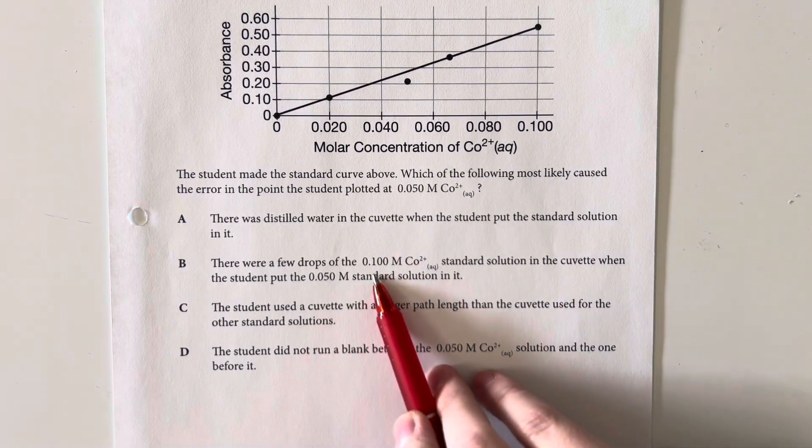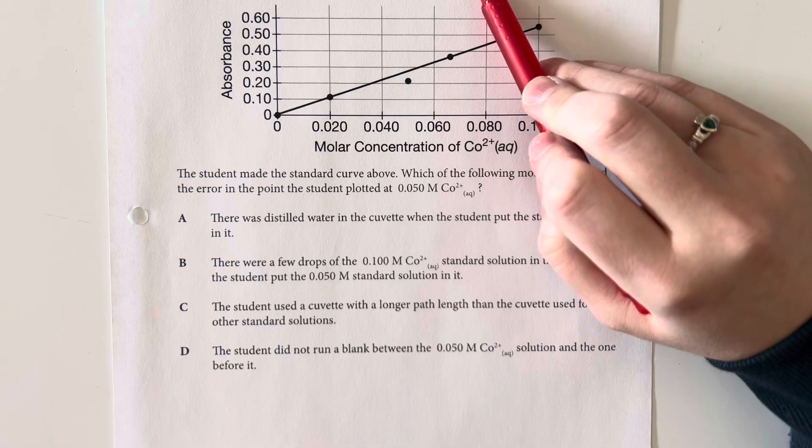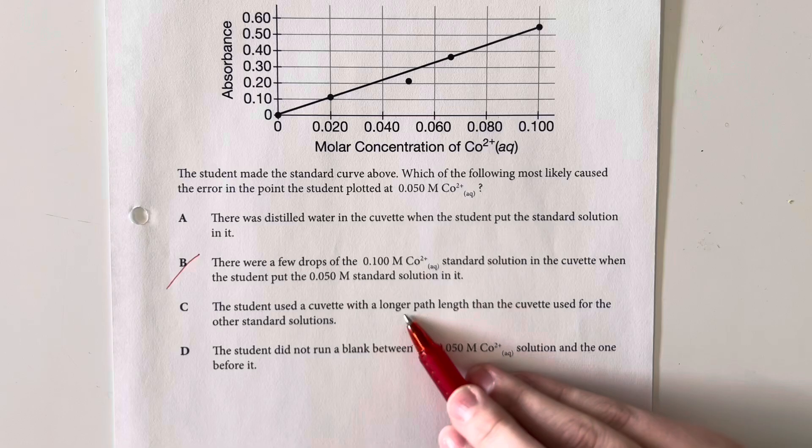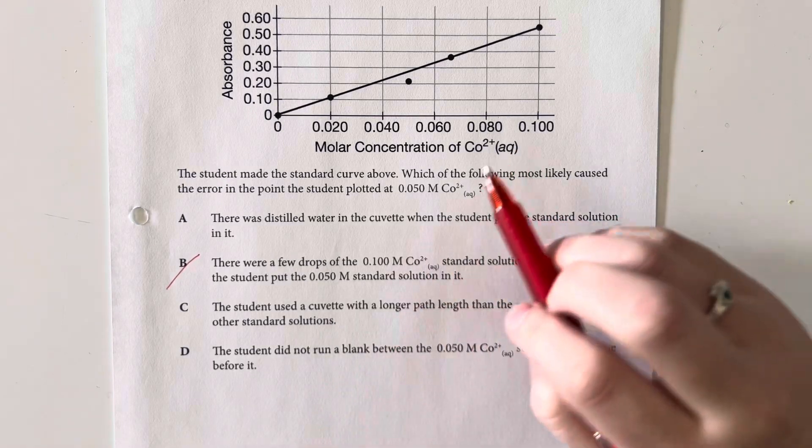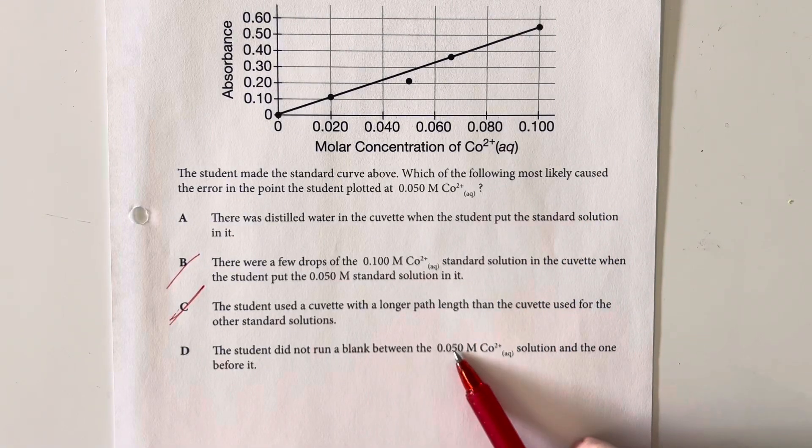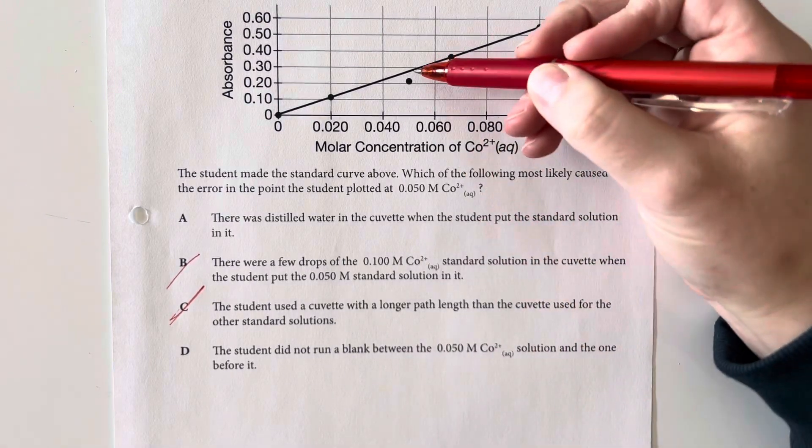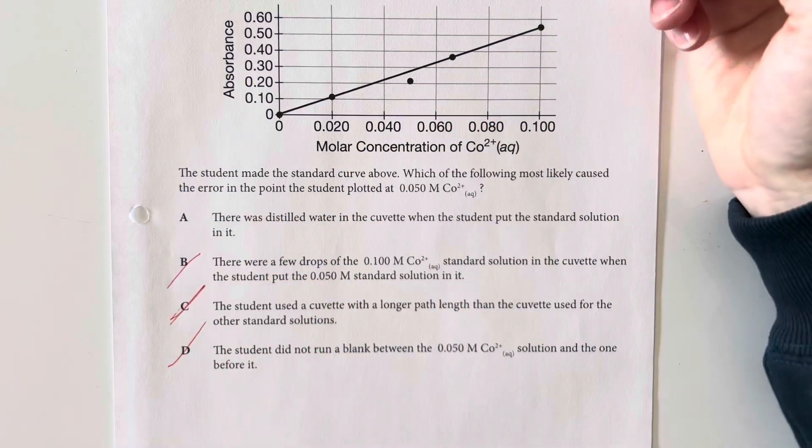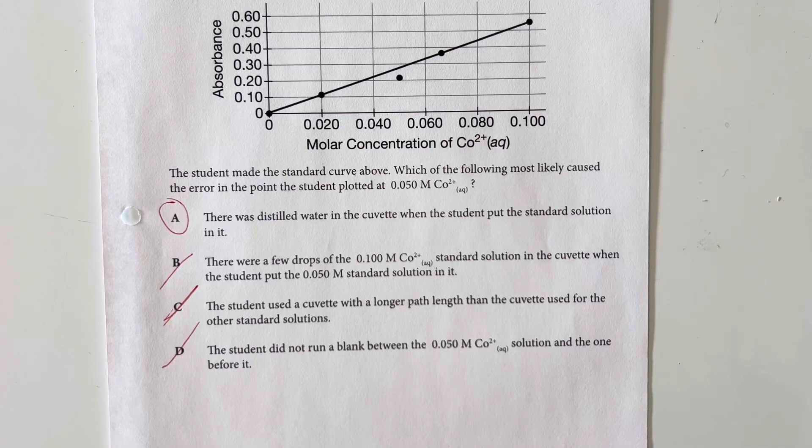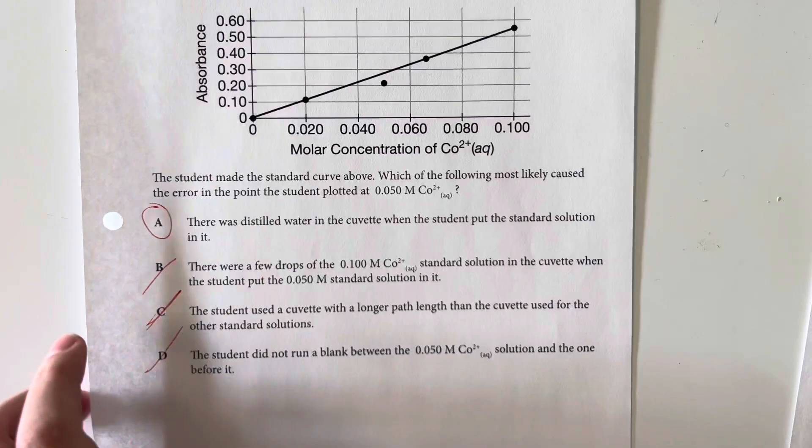There were a few drops of the 0.1 molar cobalt standard solution in the cuvette. That would raise the absorbance, not lower it. The student used a cuvette with a longer path length than the cuvette used. No. We're using the same cuvettes. Did not run a blank between the 0.05 cuvette and the one before it. That would not decrease the amount that we see there. So it being contaminated by extra water, thereby lowering the overall concentration, is going to be our best choice. So answer choice A.